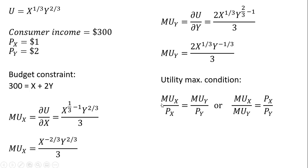I'll take that condition and substitute in what we know. The price of good X is $1, the price of good Y is $2. I'll substitute the marginal utility of good X in the numerator on the left, and the marginal utility of good Y in the numerator on the right, divided by the price of good Y, which is $2.